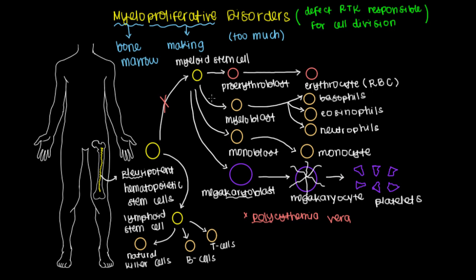If you have the defect right here where the myeloblast branches off, you would have a disorder known as chronic myelogenous leukemia. You might recall leuk meaning white, which refers to leukocytes, which I've colored in all of these beige colors here. This defect will produce a whole bunch of leukocytes, mainly these through the myeloblast lineage.